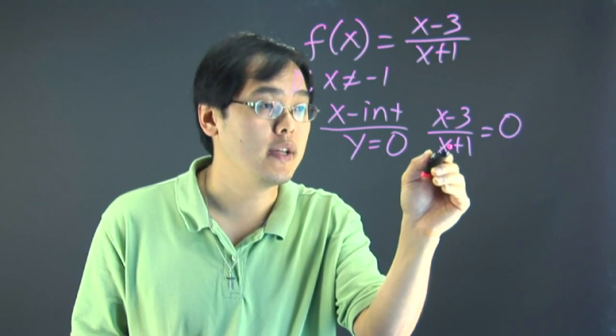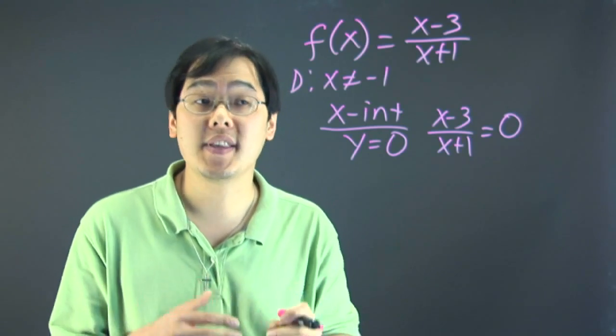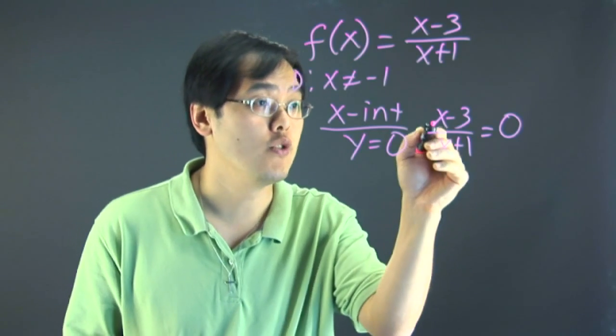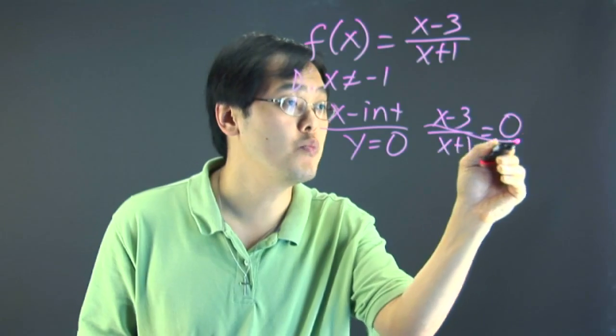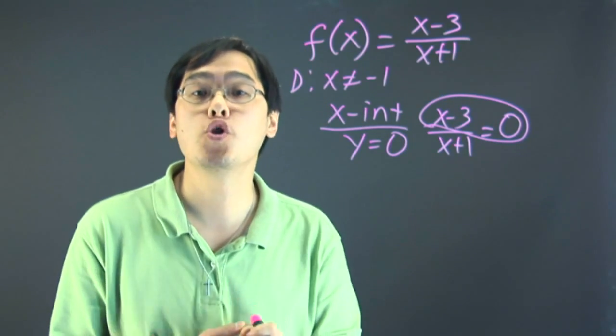Well the denominator, if the denominator is zero, it's undefined. It's not equal to zero. So to find the x intercept of any rational function, you always take the numerator and set it equal to zero. A fraction is only zero when the numerator is zero.